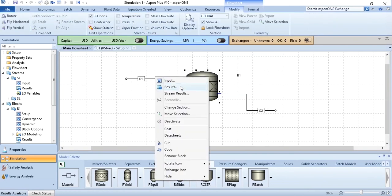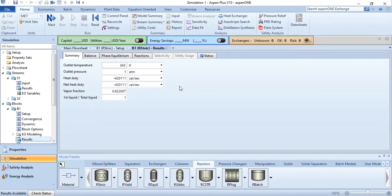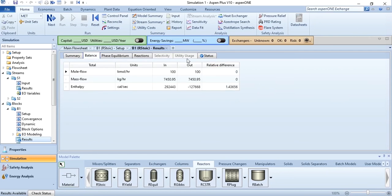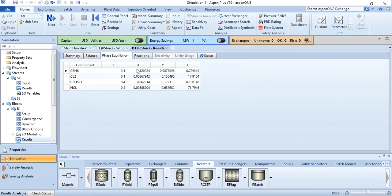What you do is right-click on it, go to results, and in results you can see the heat duty of this reactor, the outlet temperature, outlet pressure. You can go to the balance to check the difference, then the phase equilibria, the phase equilibrium values, the k value of it.